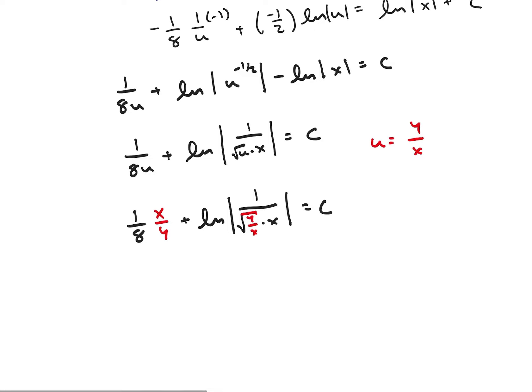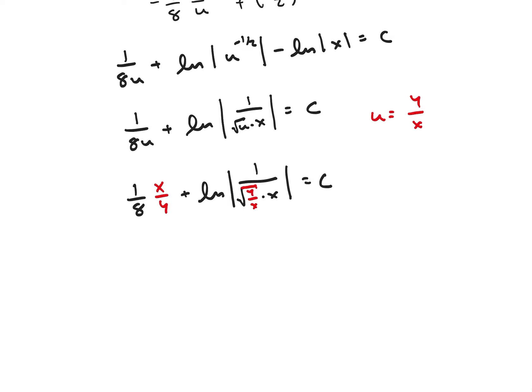And with just a little bit more simplification, I can see that that's going to be x over 8y plus the natural log of 1 over the square root of xy is equal to c. And that is my final answer.